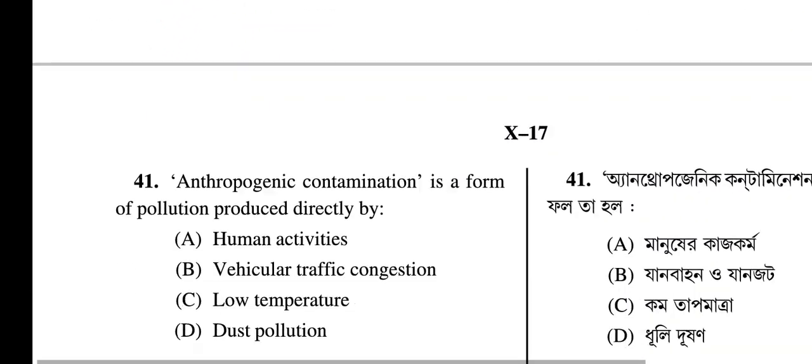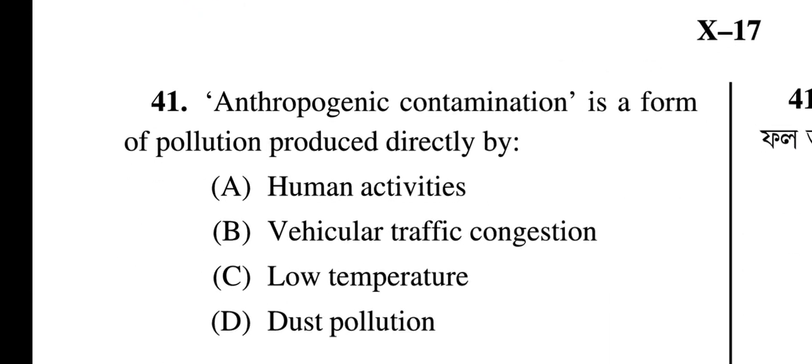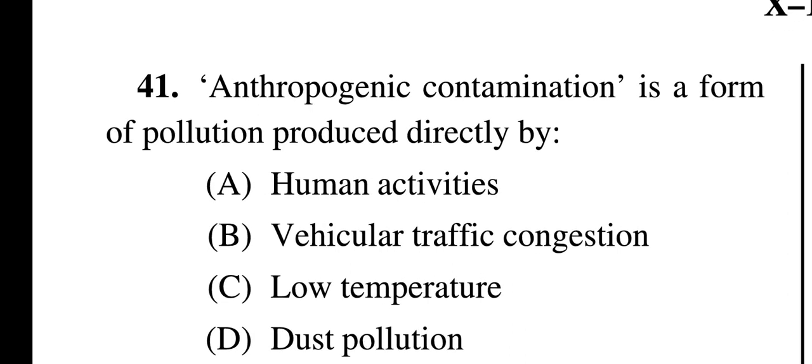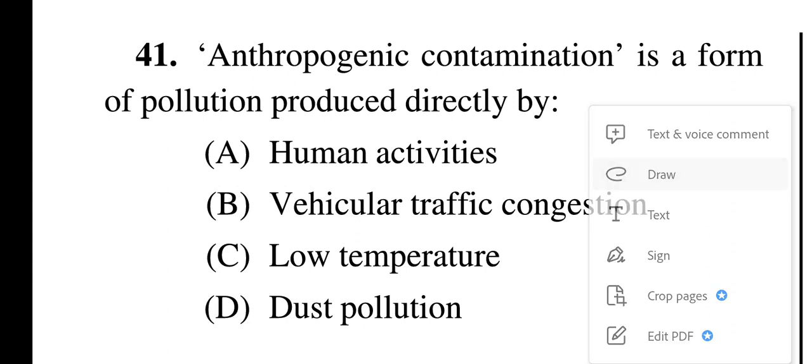Moving on to question number 41: anthropogenic contamination is a form of pollution produced directly by what? Human activities, vehicular traffic, congestion, low temperature, dust pollution. Number 41, answer A will be correct: human activities.